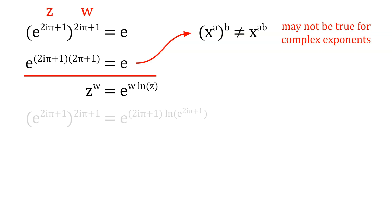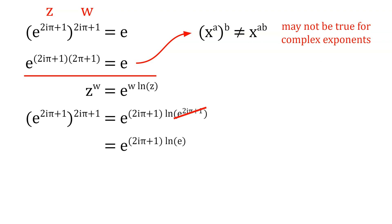Now we can plug those into our formula, and we get e to the power of 2i pi plus 1, that to the power of 2i pi plus 1, is equal to e to the power of 2i pi plus 1 times the natural log of e to the power of 2i pi plus 1. e to the power of 2i pi plus 1 is just e, so we can simplify that into the natural log of e, which is just 1, and we get e to the power of 2i pi plus 1. As stated before, e to the power of 2i pi plus 1 is just e, therefore e equals to e, which is not surprising. So by correctly applying the definition of complex exponentiation, we avoid the contradiction that pi equals zero.